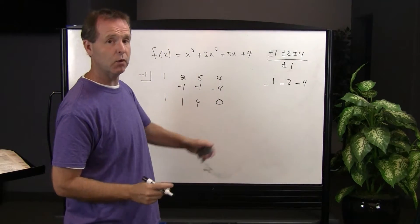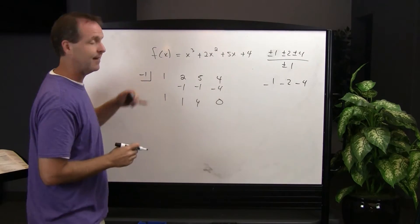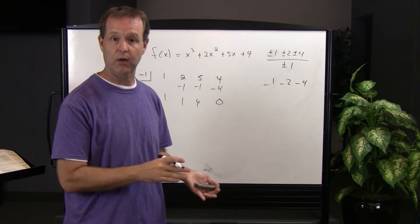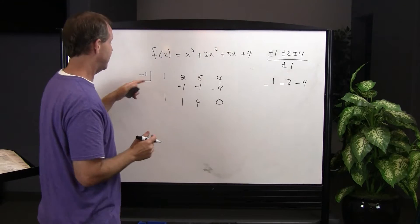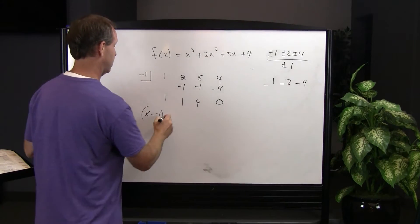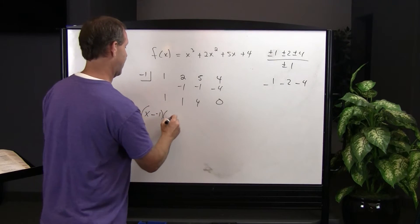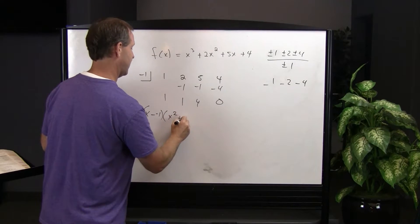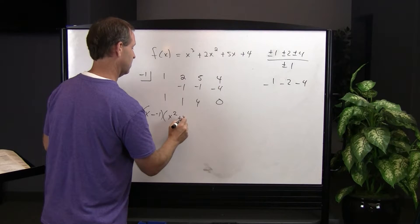It produces a zero as a remainder, that tells me that negative 1 is a real zero. It tells me that x minus negative 1 is a factor, and the remaining factor is x squared plus x plus 4.